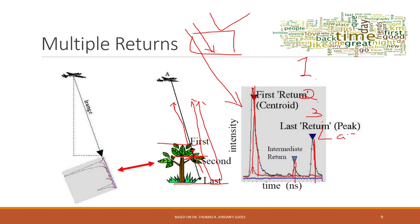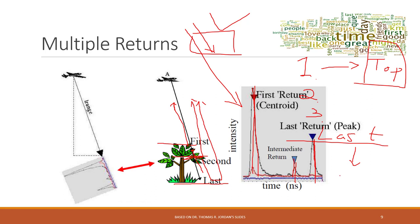The first return corresponds to the top of the target, and the last return always tells us the bottom of the target. For example, the tops of buildings — being hard surfaces — will appear in the first return. The ground will always be the last return, representing the bottom layer. That is the concept of multiple returns.